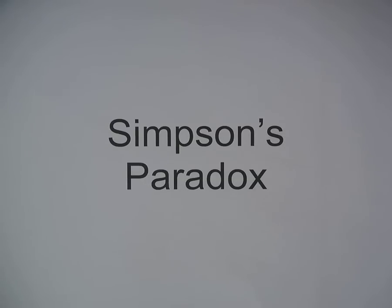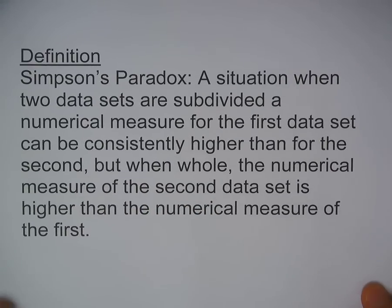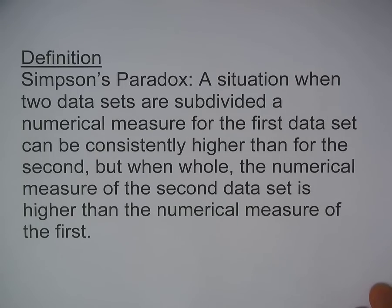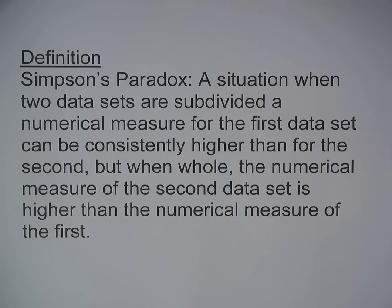This tutorial covers a type of paradox called Simpson's paradox. A Simpson's paradox is when two data sets are subdivided, a numerical measure for the first data set can be consistently higher than for the second, but when whole, the numerical measure of the second data set is higher than the numerical measure of the first.